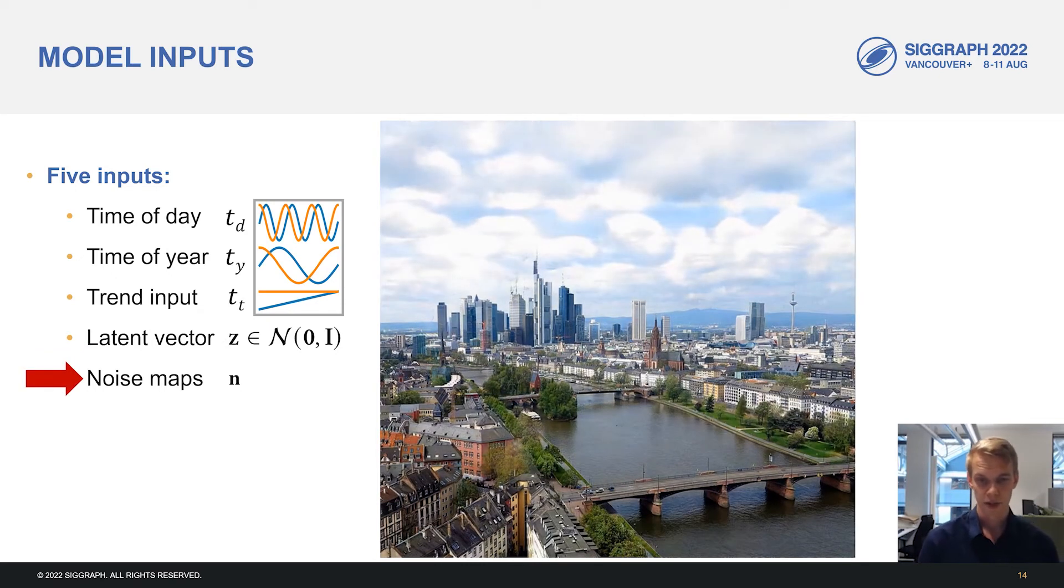Finally, the noise map produces spatially localized random variation in the image, here seen as slight movement and flickering in the clouds in the sky.